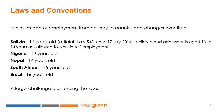Minimum age of employment changes from country to country, and within each country there are changes to legislation through the years. In Bolivia, the minimum age of employment is 10 years old; in Nigeria, 12; in Nepal, 14; in South Africa, 15; and in Brazil, 16. A large challenge is enforcing the law — although in many countries there is a law prohibiting children from working below the minimum age, it is common to see a large percentage of them working.